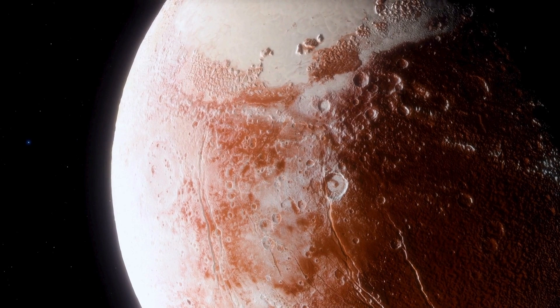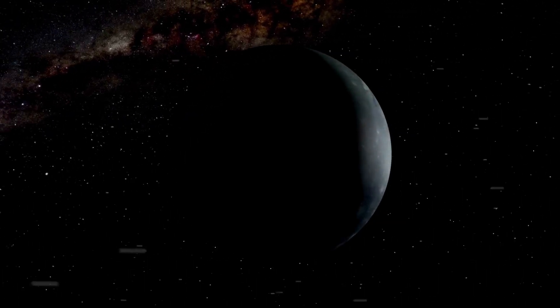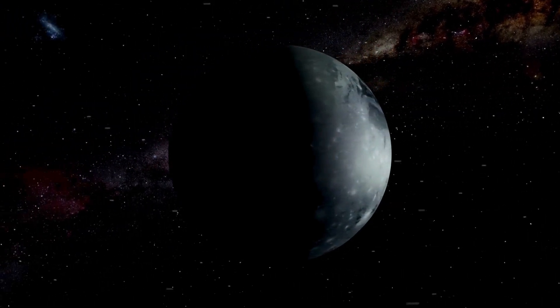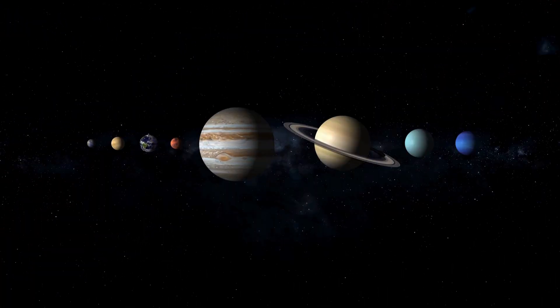For Pluto, this means that when it comes closest to Neptune or any other giant planet, it is positioned well above their orbital plane, providing an extra layer of protection from potential collisions.